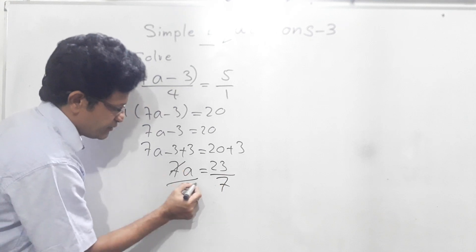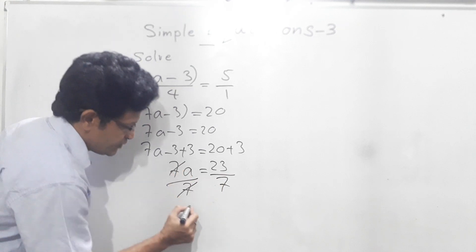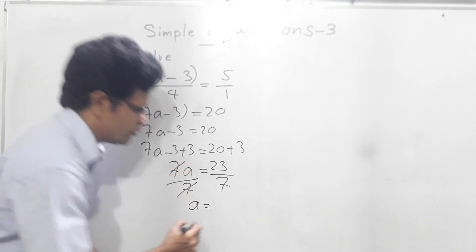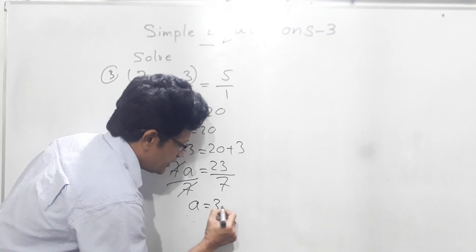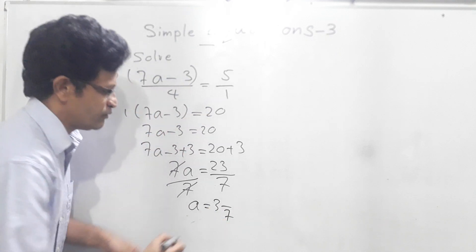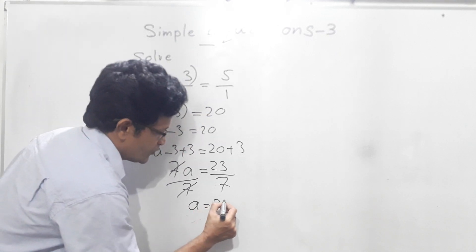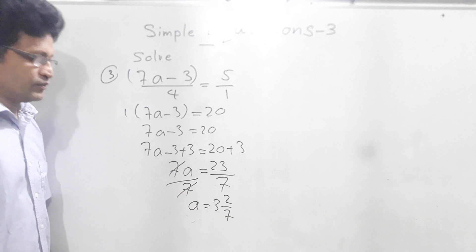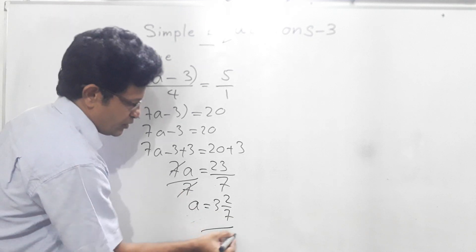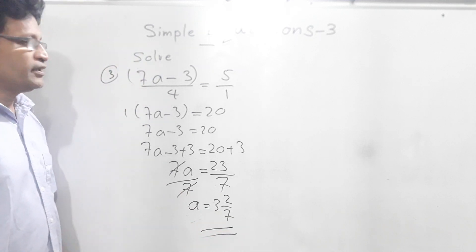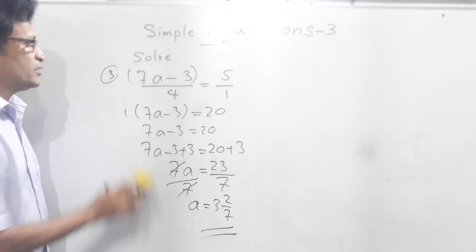7 and 7 cancel. Here we have a. 23 divided by 7 — that means 3 remainder 2, so a equals 3 and 2 sevenths. Okay? Now we did the third question.